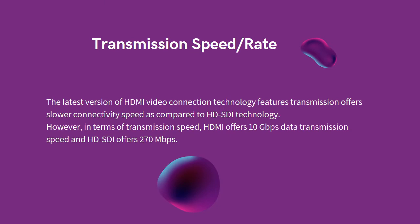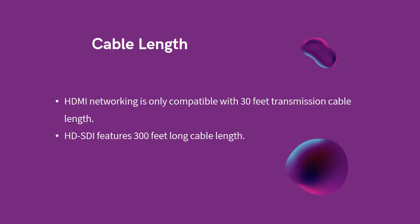Transmission Speed and Cable Length: The latest version of HDMI video connection technology offers slower connectivity speed compared to HD-SDI technology. In terms of raw transmission speed, HDMI offers 10 Gbps data transmission speed while HD-SDI offers 270 Mbps. Regarding cable length, HDMI networking is only compatible with a 30-foot transmission cable length; if longer distances are needed, signal amplifiers or repeaters must be integrated. On the other hand, HD-SDI features a 300-foot cable length, making long-distance video broadcasting convenient.